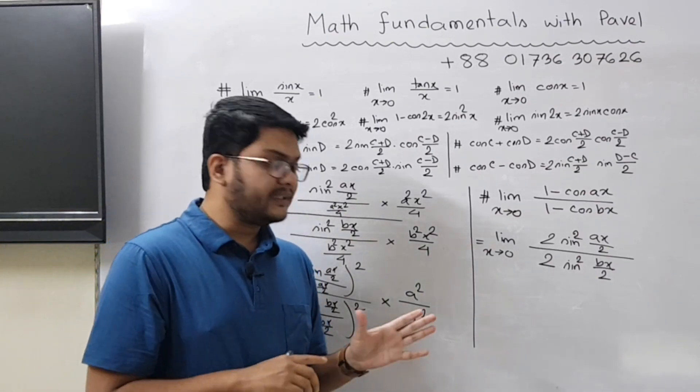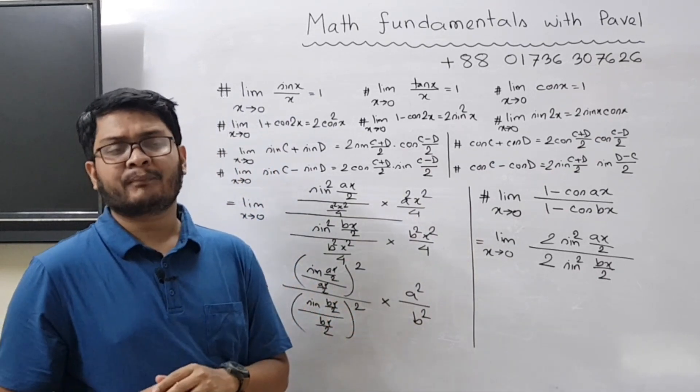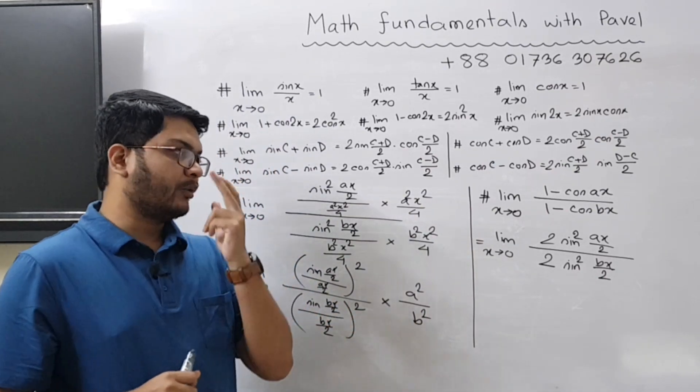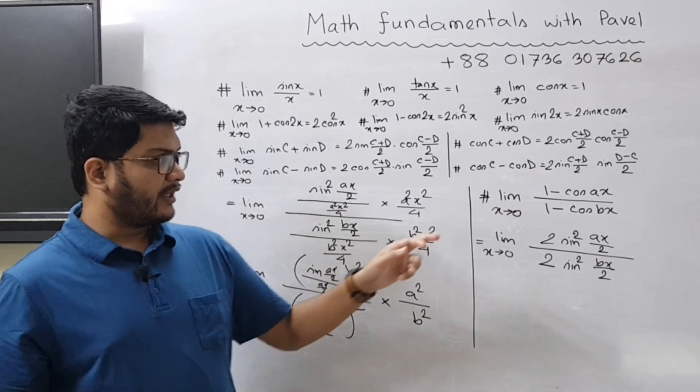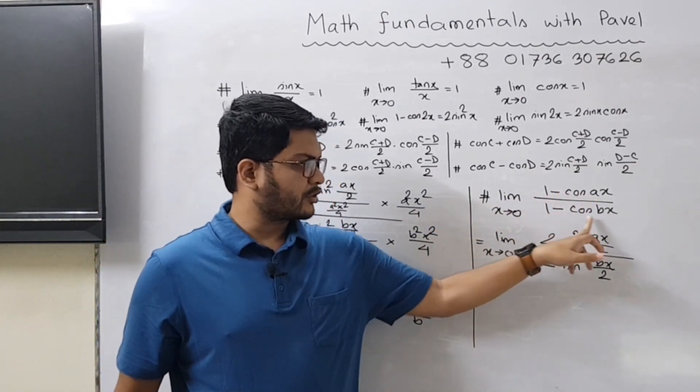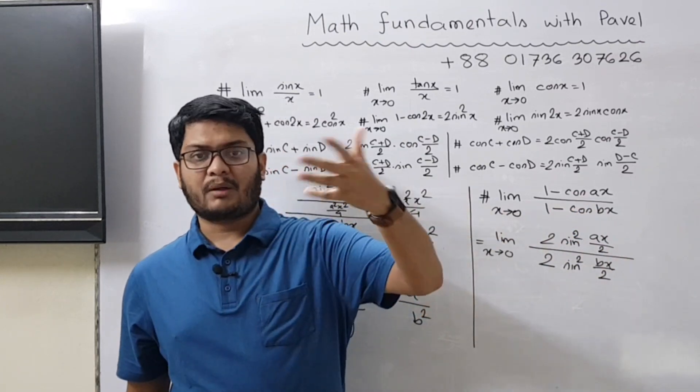Now you can use this answer as a formula. So let me show you how can you use this result as a formula. So whenever you have (1 - cos ax) / (1 - cos bx) the answer will be a²/b².